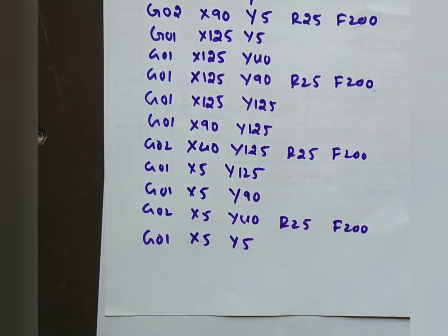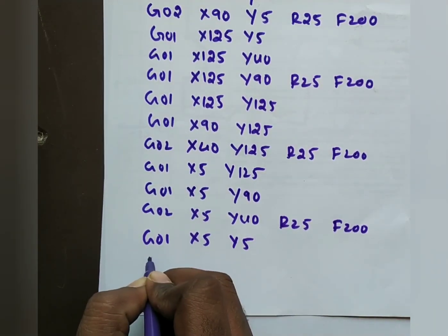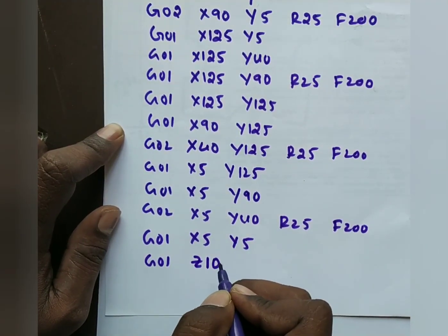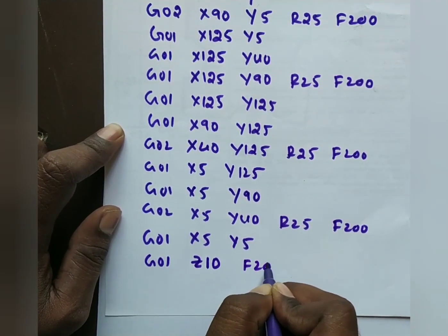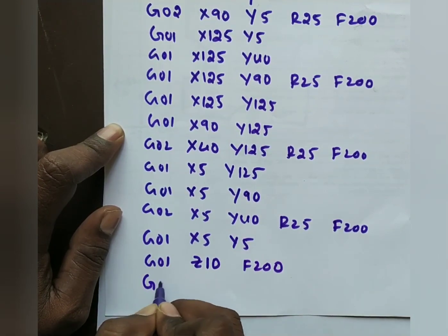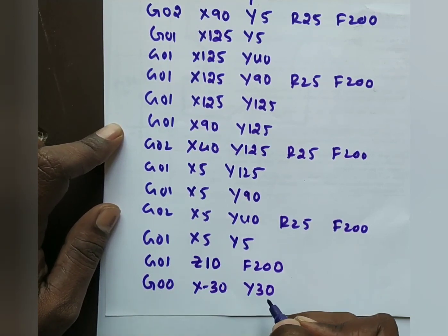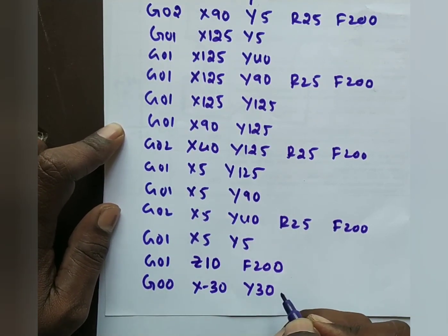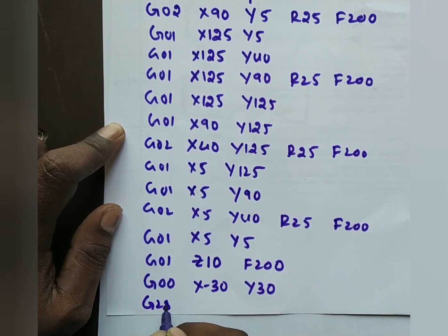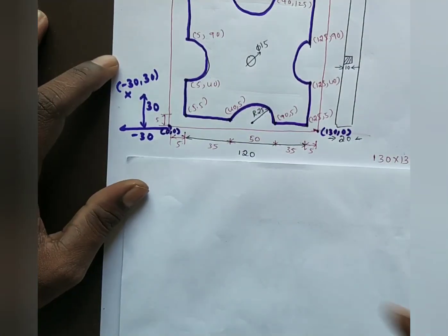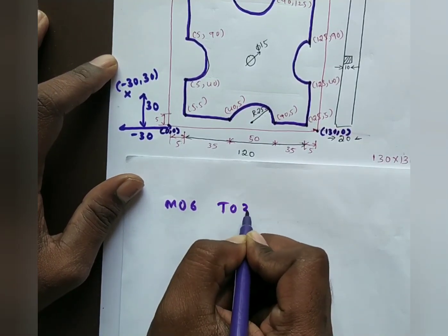Send the tool to reference point: first lift with G01 Z10 feed 200, then G00 X-30 Y30. Profile milling is over. Use G28 to send tool to home position. Now select tool for drilling: M06 T03.